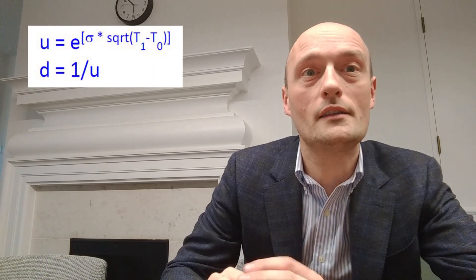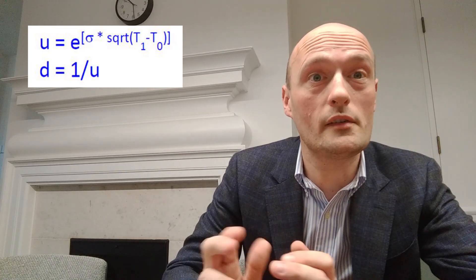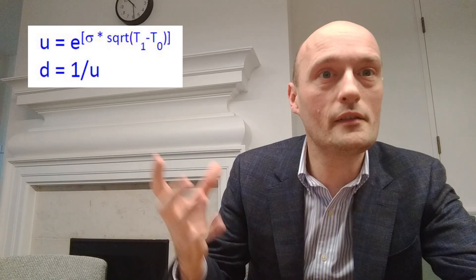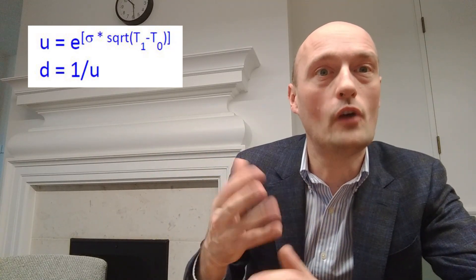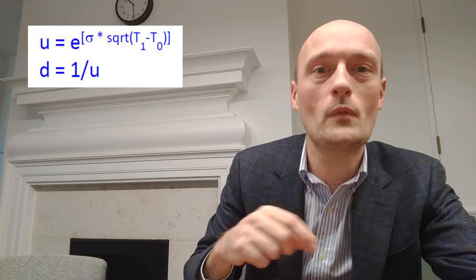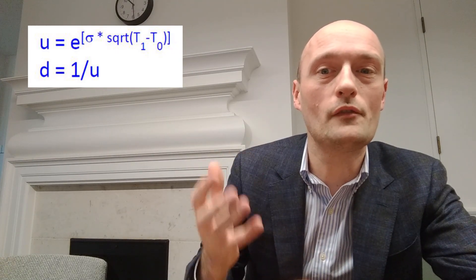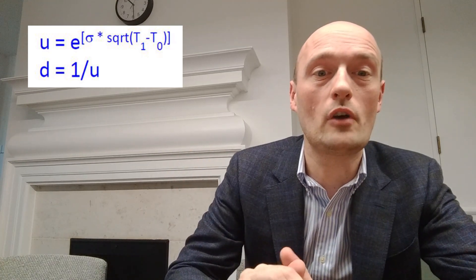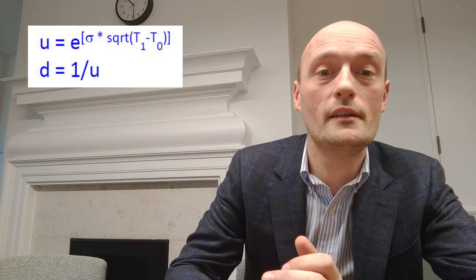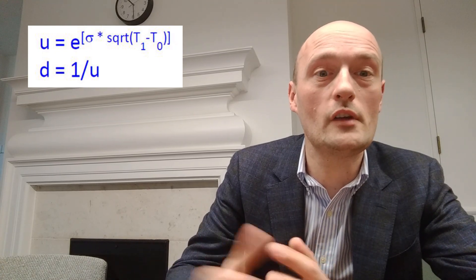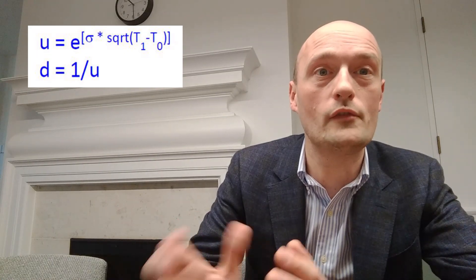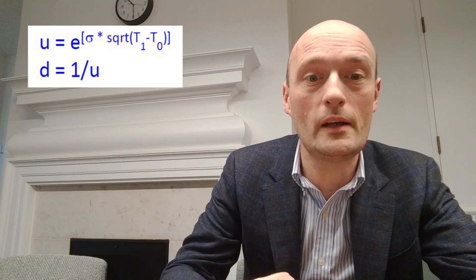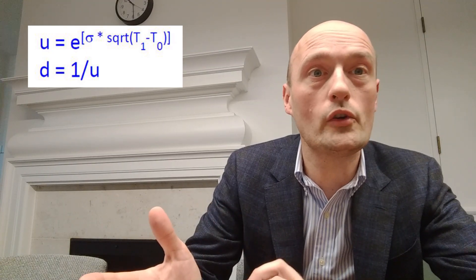So early on, I said that we really only need to know two things to price a derivative on an underlying. And that is the price of the underlying right now and the volatility of the underlying. So we get u and d from the volatility of the underlying. And here's the formula on the screen right now. So u equals e to the sigma, which is the standard deviation of the underlying, times the square root of time. And that's time per step in our binomial tree. And then d is just 1 over u.